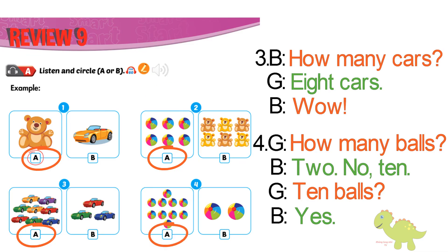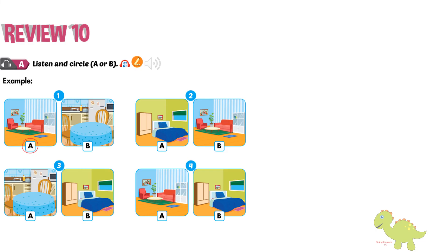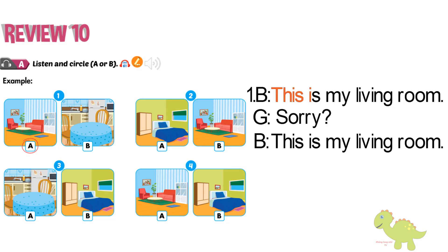Review 10. A. Listen and circle A or B. 1. This is my living room. Sorry? This is my living room. 2. This is my bedroom. Wow. It's nice. 3. This is my kitchen. I like it. Thank you. 4. This is my bedroom. Your what? My bedroom.